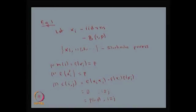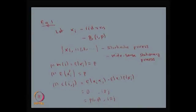Since all three properties of wide sense stationarity are satisfied, this process is a wide sense stationary process. In fact, even if the random variables are simply IID, we can verify the process is wide sense stationary. For illustration, we used the Bernoulli process. More examples on continuous time stochastic processes are discussed in the problem sheet.